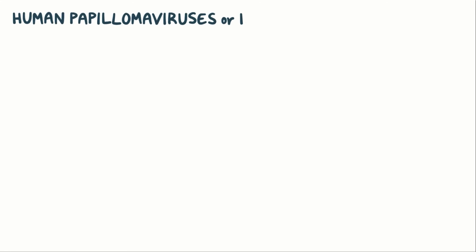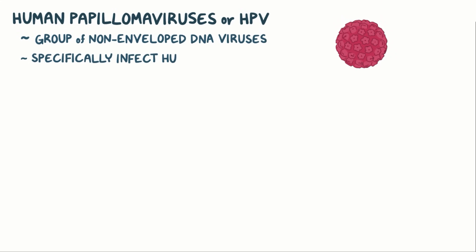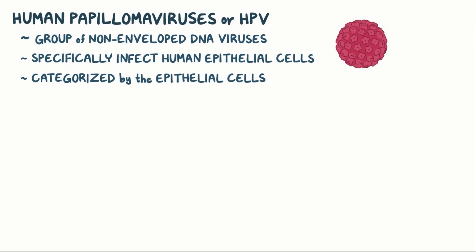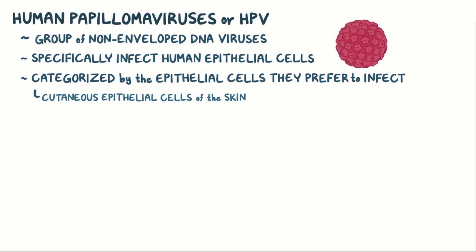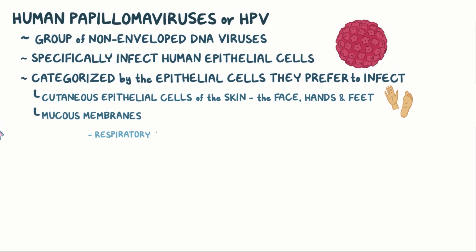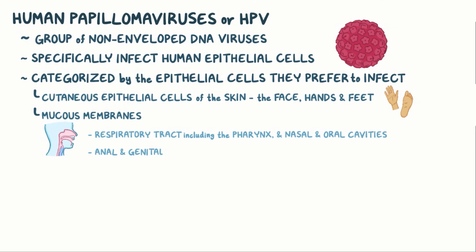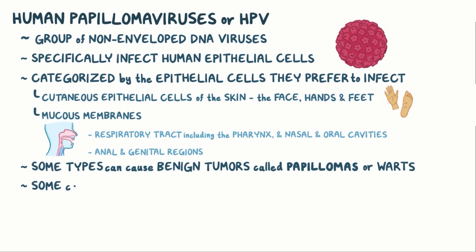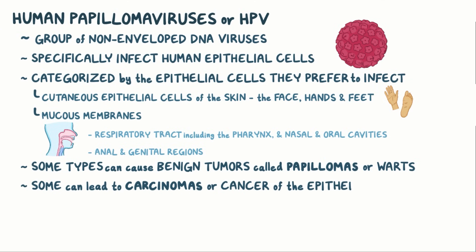Human papillomaviruses, or HPV for short, are a group of non-enveloped DNA viruses that specifically infect human epithelial cells. There are over 100 different types of HPVs, which can be categorized by the epithelial cells they prefer to infect, like cutaneous epithelial cells of the skin — especially the face, hands, and feet — and epithelial cells of mucous membranes, especially the respiratory tract including the pharynx, and nasal and oral cavities, and anal and genital regions. Some types can cause benign tumors, called papillomas or warts, and some can lead to carcinomas, or cancer of the epithelial cells.